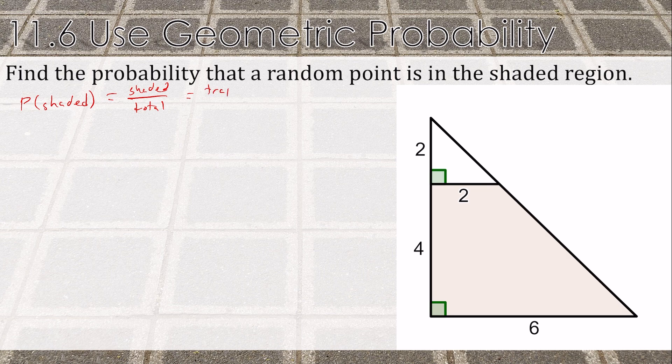Our trapezoid is one-half the height times base one plus base two. Triangle is one-half base times height.